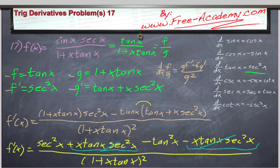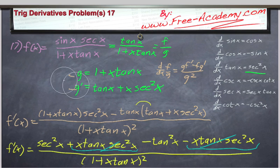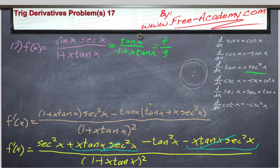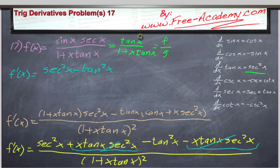And what we get, if we clear up a little bit of room here, is that the first derivative is equal to secant squared x minus tangent squared x over 1 plus x tan x squared.